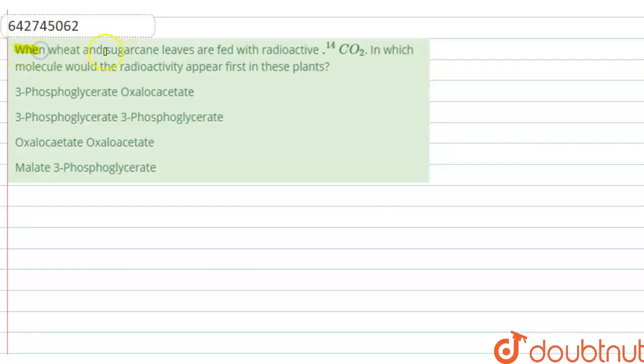The question says: when wheat and sugarcane leaves are fed with radioactive 14-carbon dioxide, in which molecule would the radioactivity appear first in these plants?